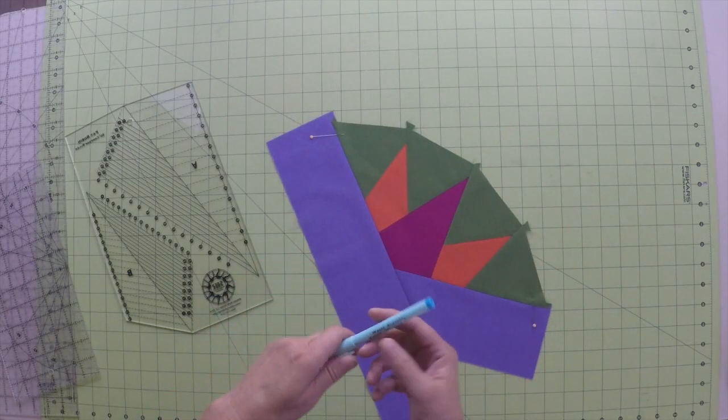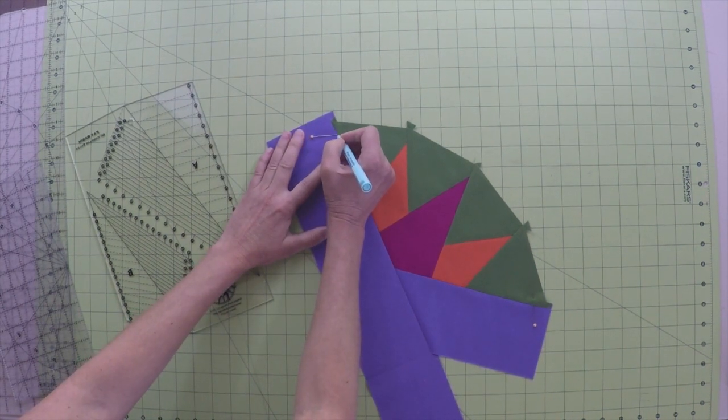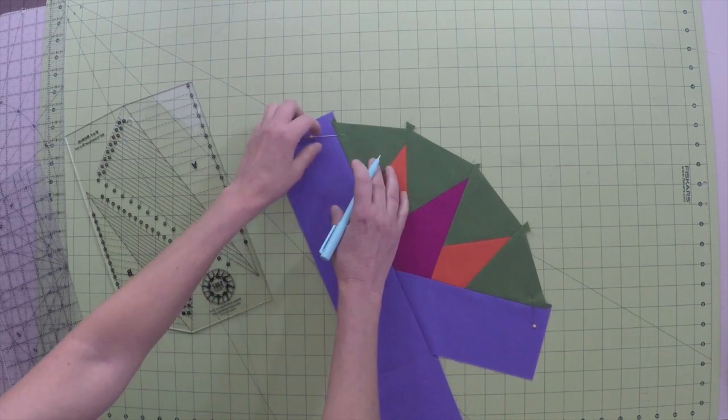For the next step, it will be easier if the pins are removed, so I use a fabric marker to place small marks in place of the pins.